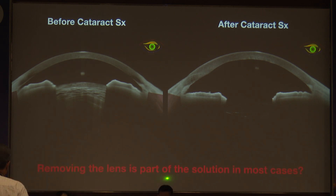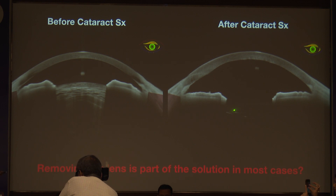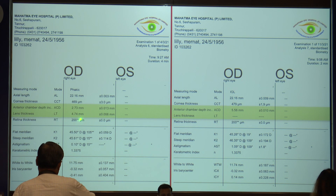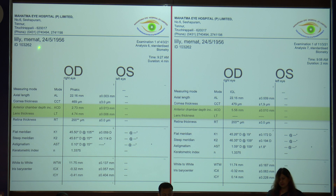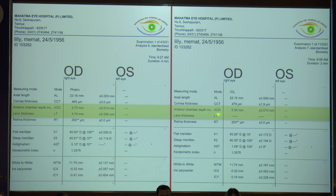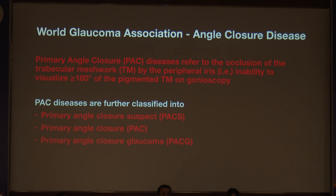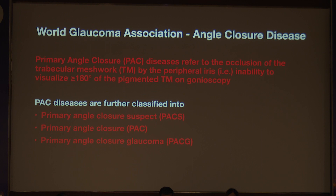Removing the lens — is it part of the solution? In one of my patients, you can see lens thickness before surgery is 4.74 mm, and after surgery the anterior chamber depth increased from 2.73 to 5.56 mm. Angle closure is defined as the occlusion of the trabecular meshwork by the peripheral iris that cannot be visualized for at least 180 degrees. We have many categories — PACS, PAC, and PACG — and we are going to see how the lens has a role.